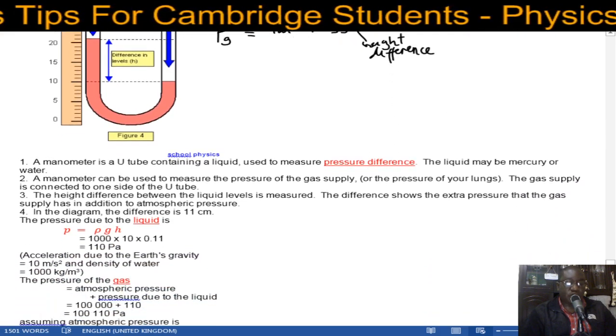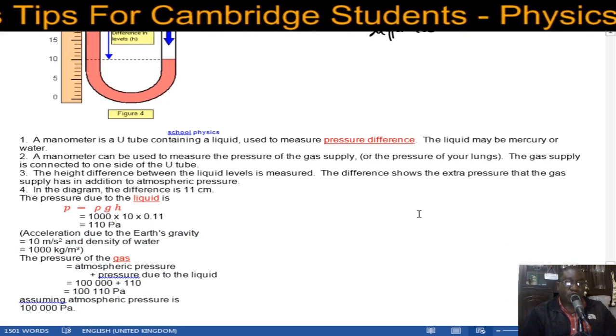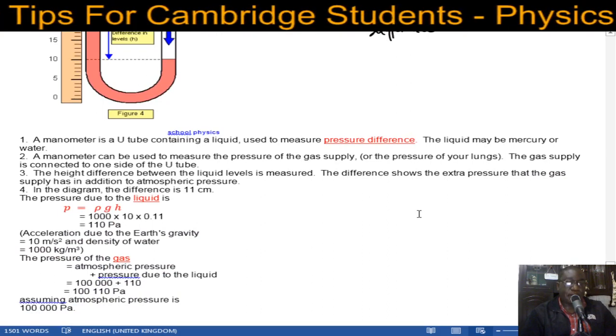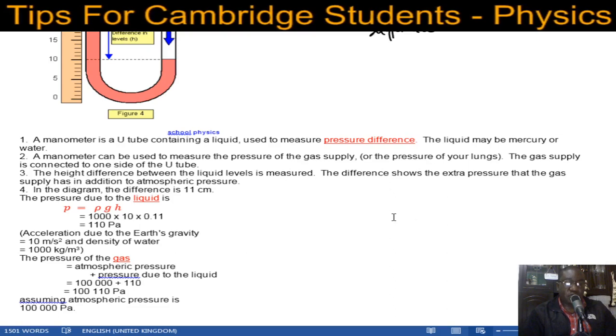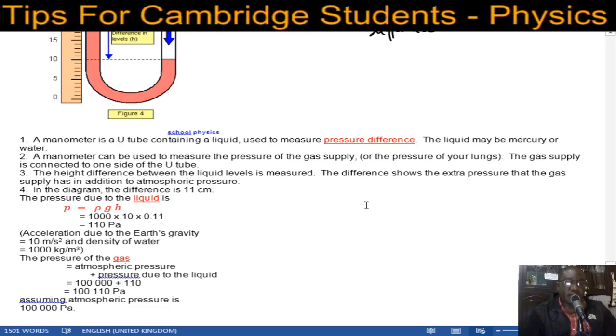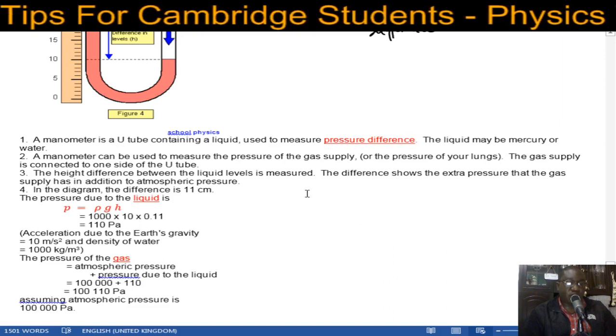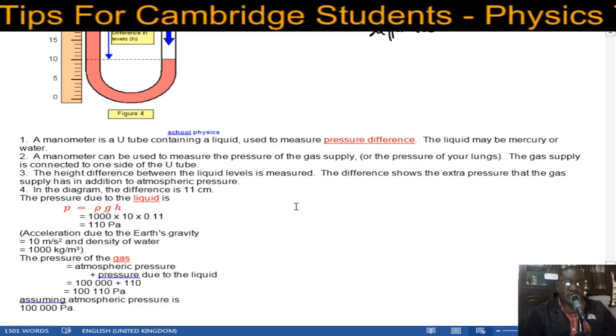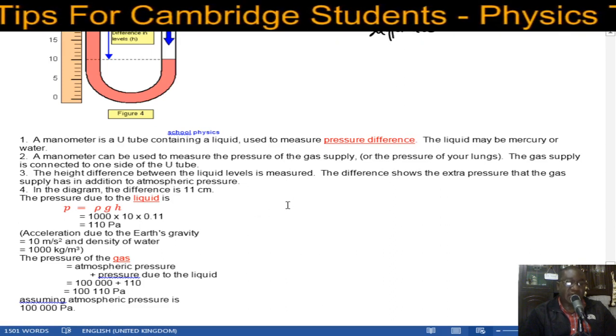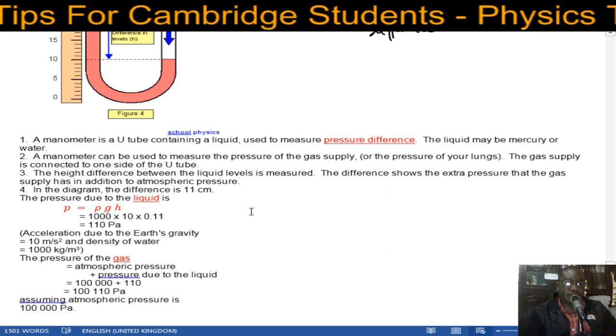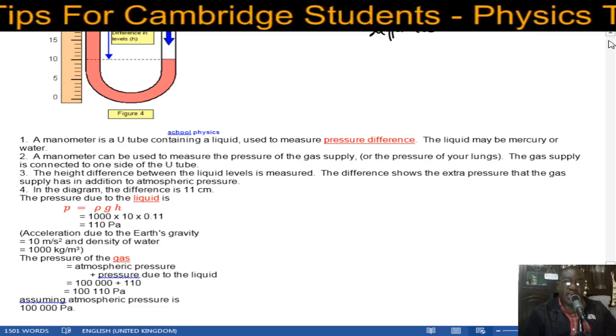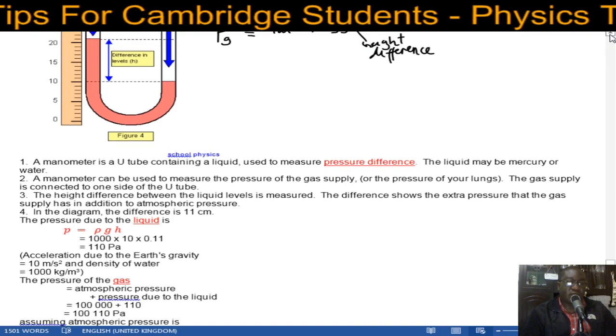A manometer is a U-tube containing a liquid used to measure pressure difference. The liquid may be mercury or water. A manometer can be used to measure the pressure of the gas supply. The gas supply is connected to one side of the U-tube. The height difference between the liquid levels is measured. The difference shows the extra pressure that the gas supply has in addition to atmospheric pressure.